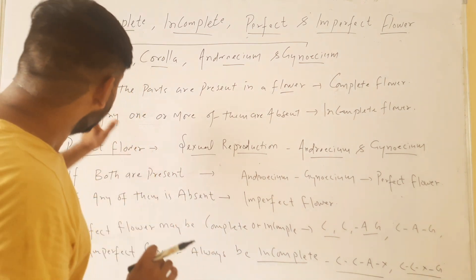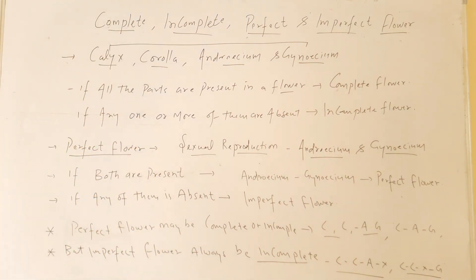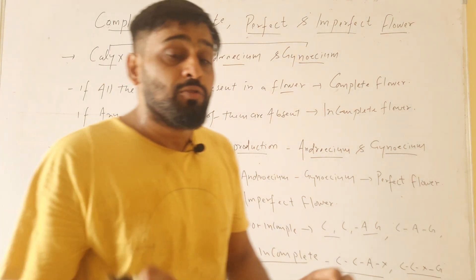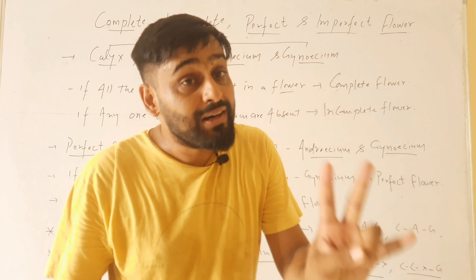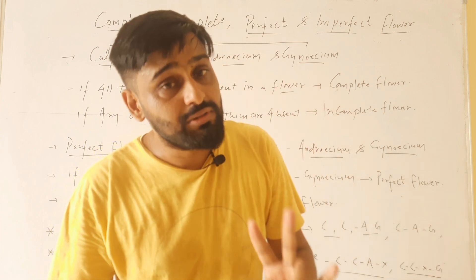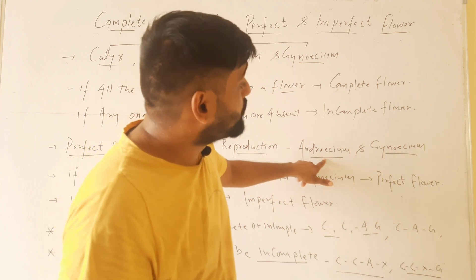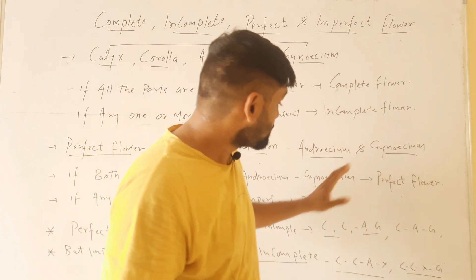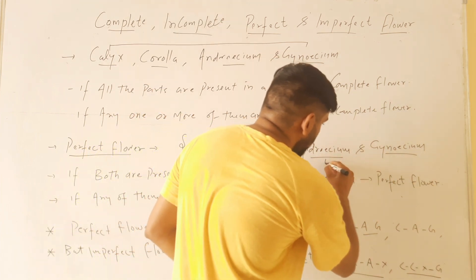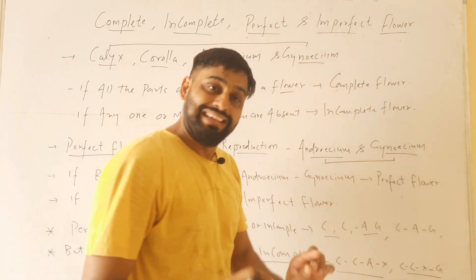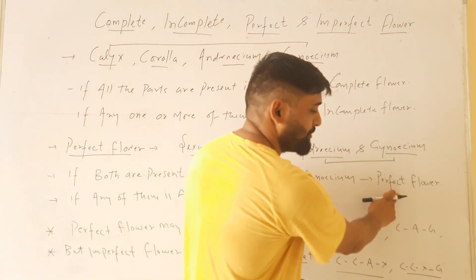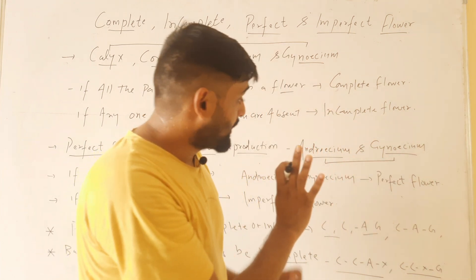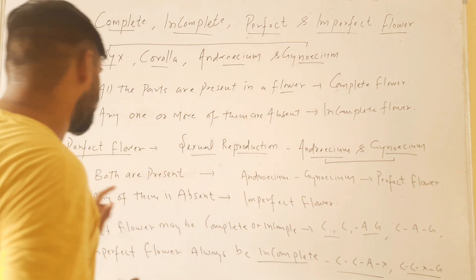Now coming to the next term: perfect flower. We know that flowers are made for sexual reproduction, and two parts are necessary for sexual reproduction — that is androecium and gynoecium. If both these parts are present in a flower, then this flower will be called a perfect flower.